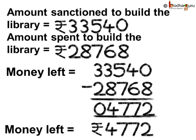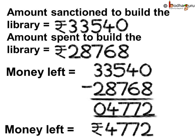Let us see again how we solve this problem. Amount sanctioned to build the school library was 33,540 rupees. Amount spent to build the school library was 28,768 rupees. Money still left with the school is equal to 33,540 minus 28,768, which is equal to 4,772 rupees. Thus, money left after building the school library was 4,772 rupees.